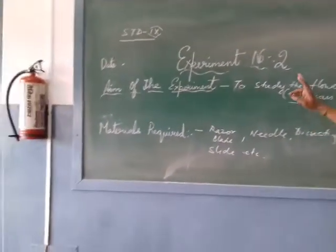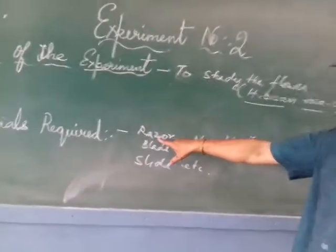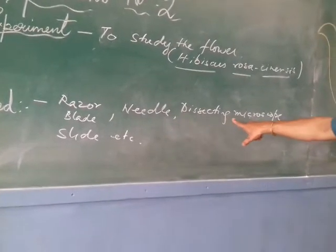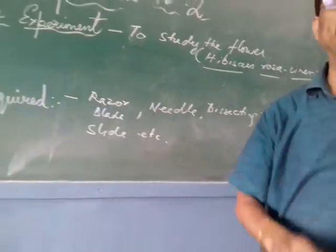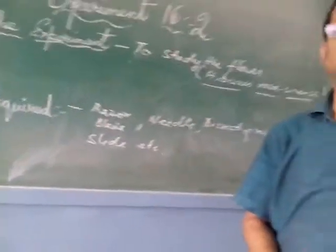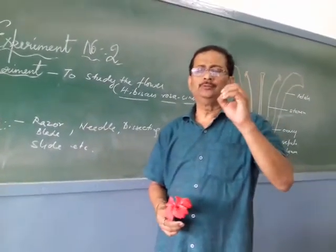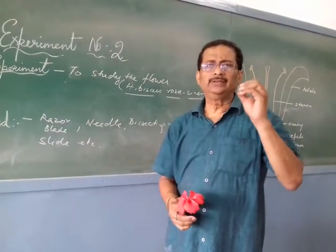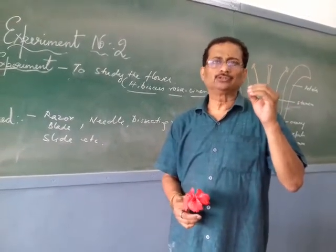Now, the materials required to study this flower are: a razor, a needle, a dissecting microscope, and a slide. The dissecting microscope — which I have shown earlier — is used to see the anther lobes or the chambers of the ovary.